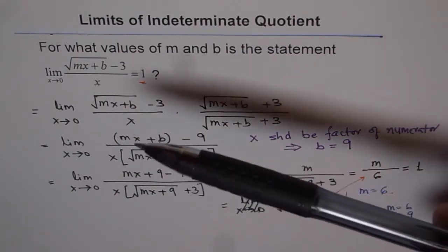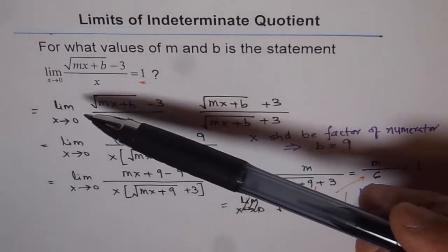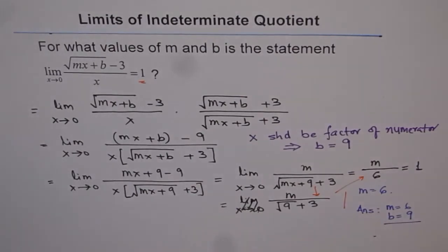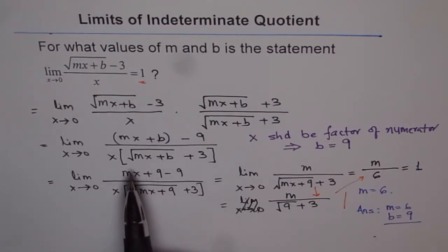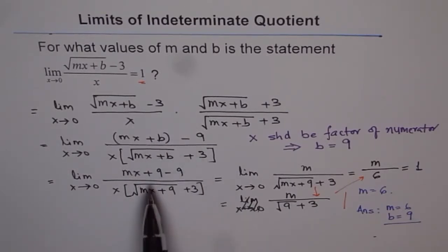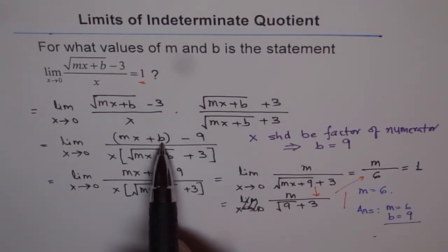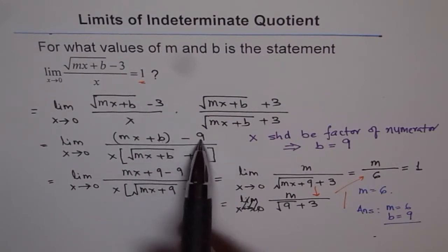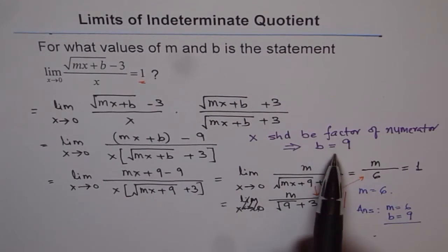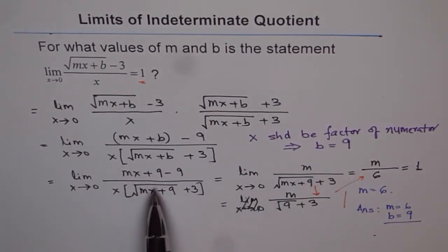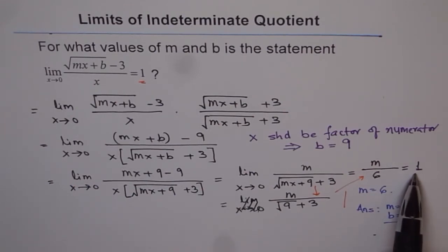So first step was, since limit of this function exists and x is approaching 0, which will make denominator 0, x should be factor of numerator. That is first and foremost. Now, so it is a kind of indeterminate quotient, 0 over 0. To solve this, we'll rationalize it. So we rationalize, simplify, and then we want x as a factor in the numerator. That is possible only if b is 9. Otherwise, x will not be a factor. If b is 9, then 9 minus 9 will be 0. We are left with mx. So that gave us the value of b, which is 9. And once we plug in b as 9 in both numerator and denominator and then continue and equate the limit to 1, we find the value of m as 6. So that is how the problem is solved.